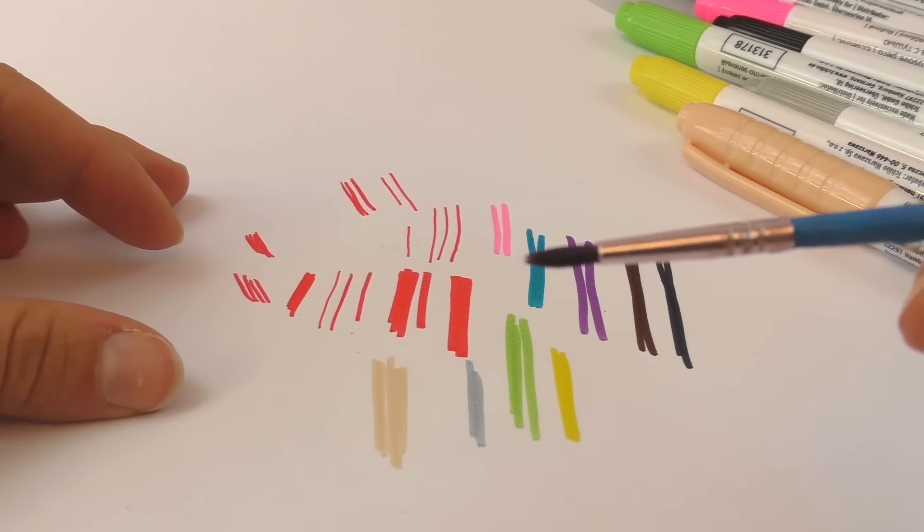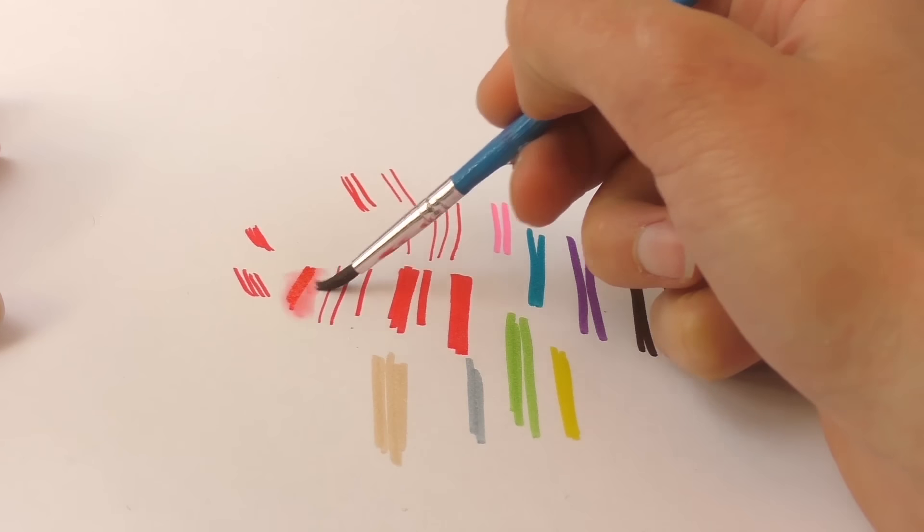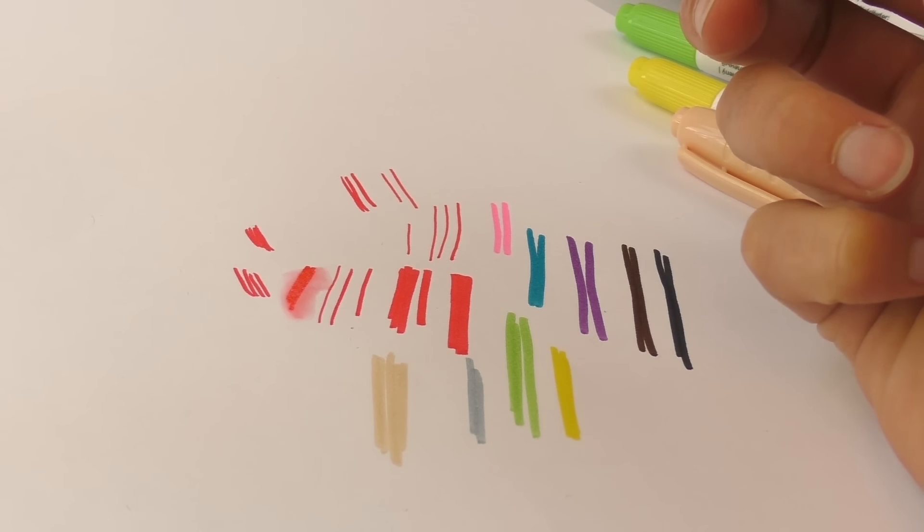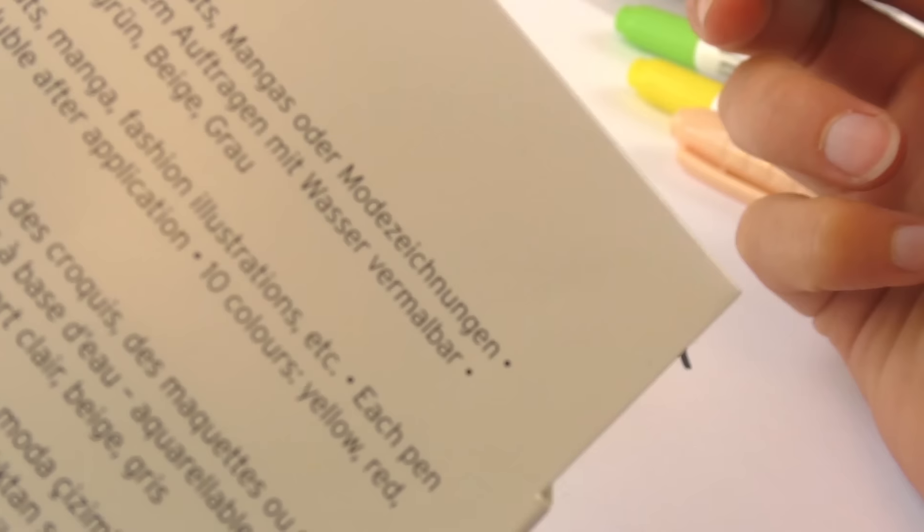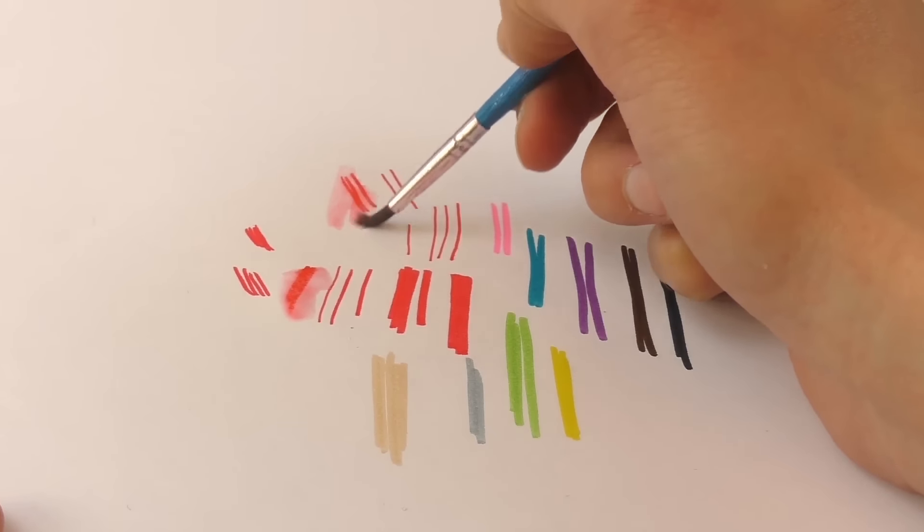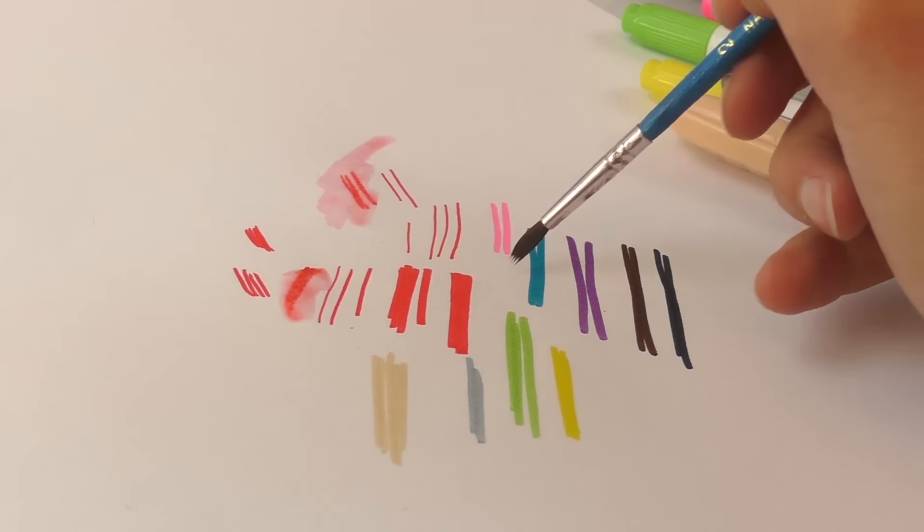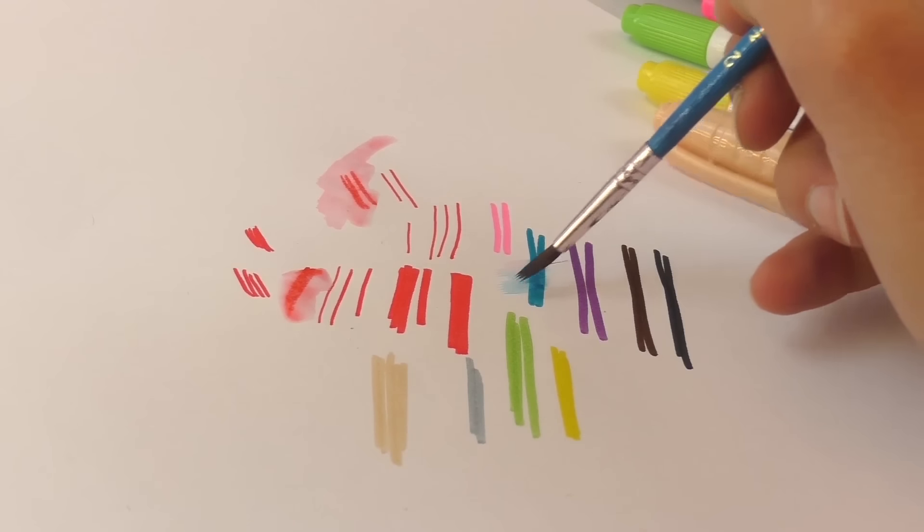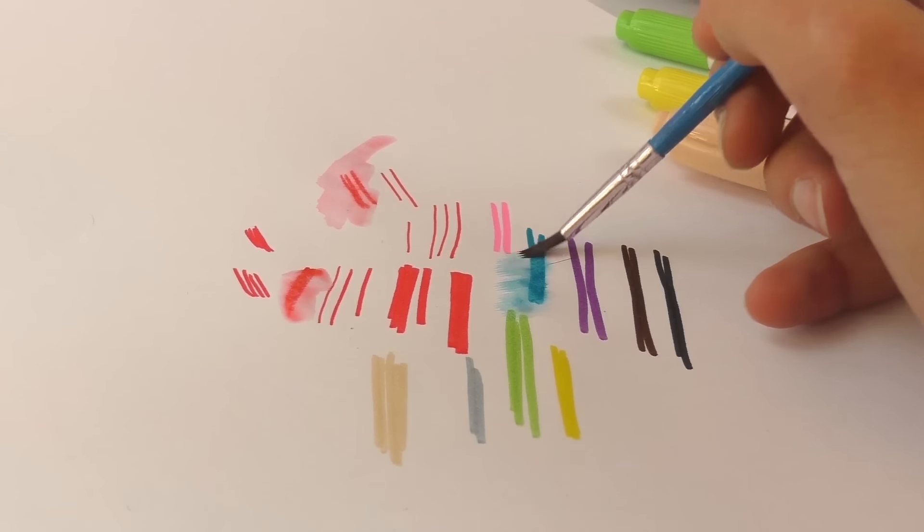The very special thing about these felt tips is when you put some water on your paintbrush, you can use them as watercolor paint essentially. You can mix them up, which is great because you can draw something with the felt tips and then add some water to it on a brush to get a nice effect. Let's try the blue—oh that's really lovely.